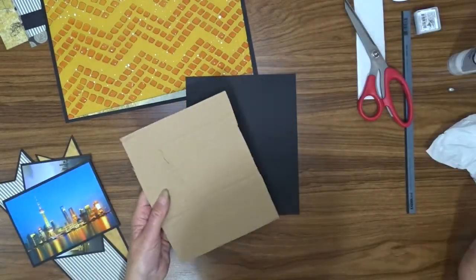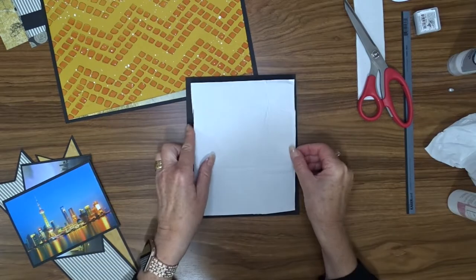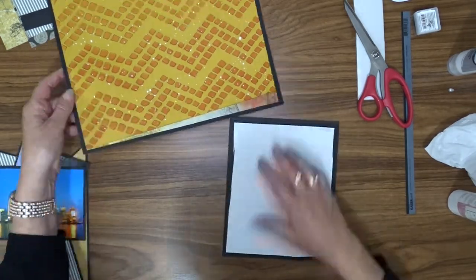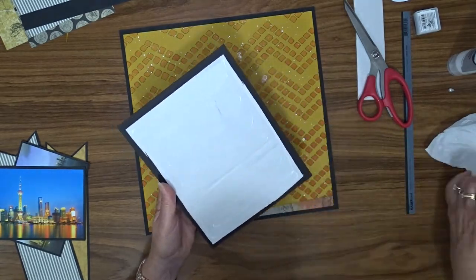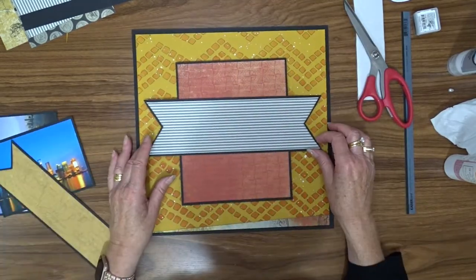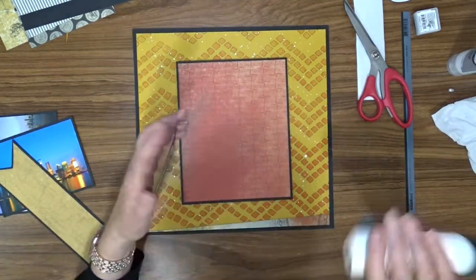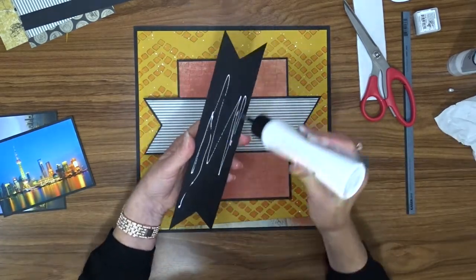Some of my layers are going to be lifted up off of the background. The first one—so the bottom layer, the biggest piece—is going to be attached to a piece of scrap cardboard. I find that I'm using cardboard or chipboard scraps more and more instead of the foam tape because I think I get a better feel to it; it's dirtier.